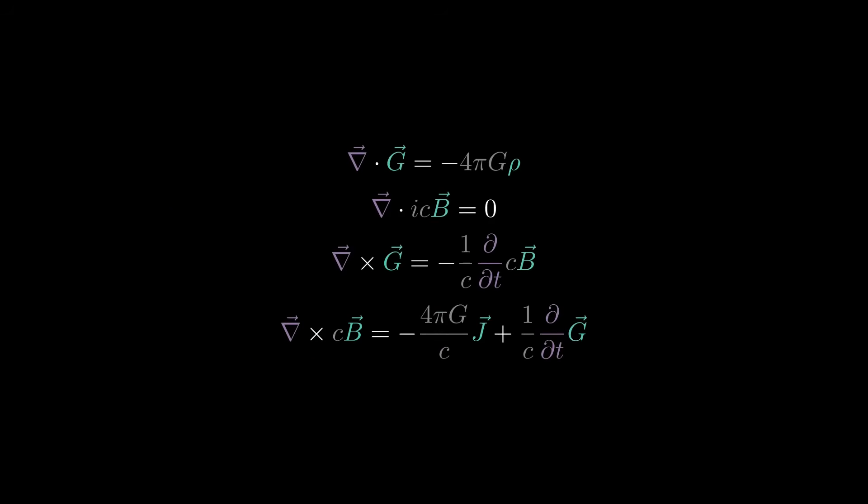Now multiply by i both sides here and here. Multiply by negative one here. Write it as i squared and distribute. Write every term related to fields in the left-hand side and let everything related to the sources on the right-hand side.